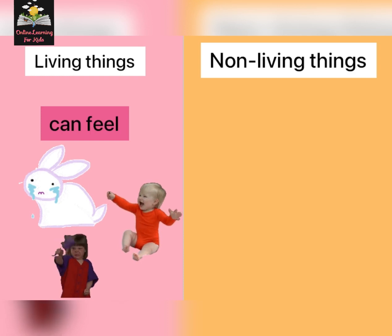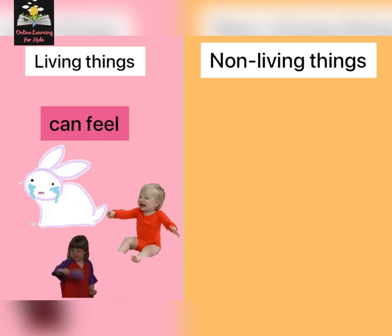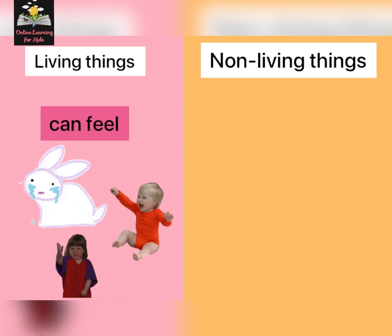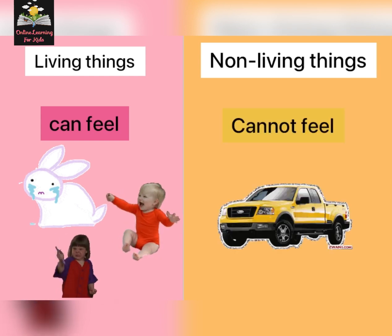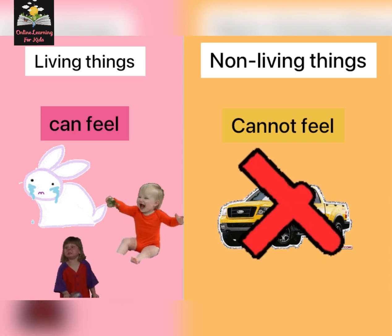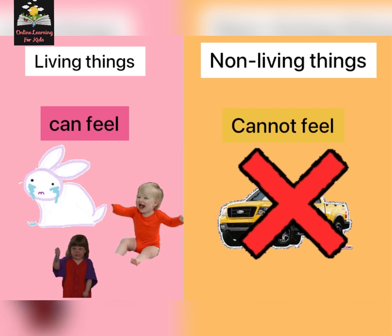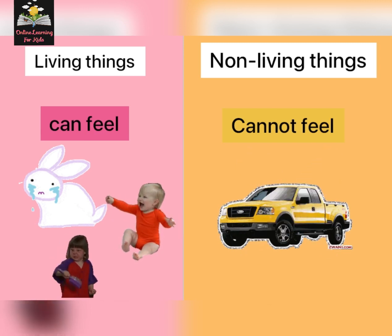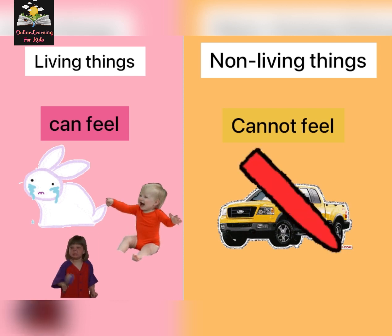Living things can feel — like a rabbit is crying, a baby is happy, and a girl is angry. Living things have emotions, and non-living things cannot feel. Is your car crying? It's not. Hopefully you understand the difference between living and non-living things.